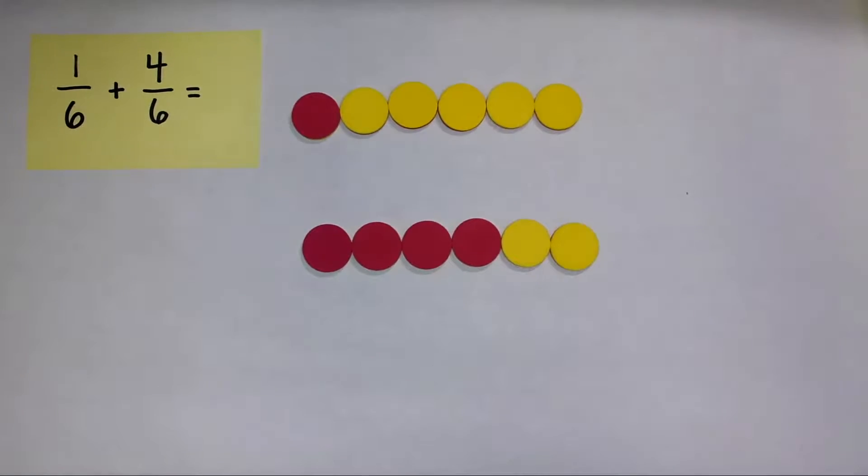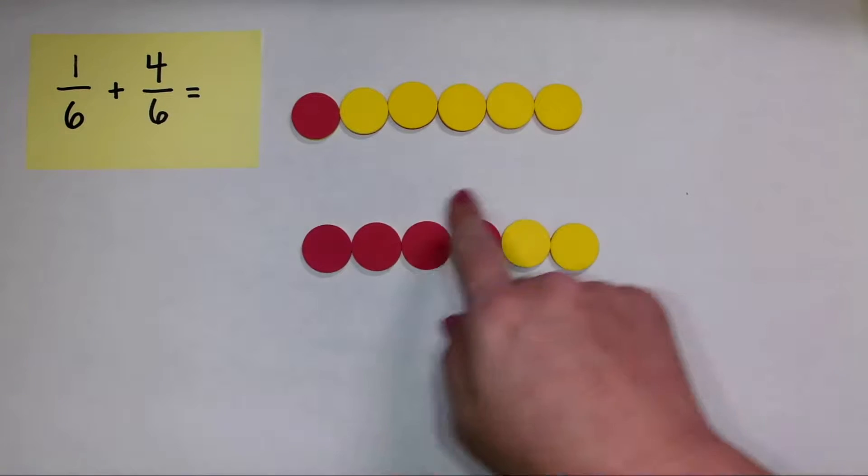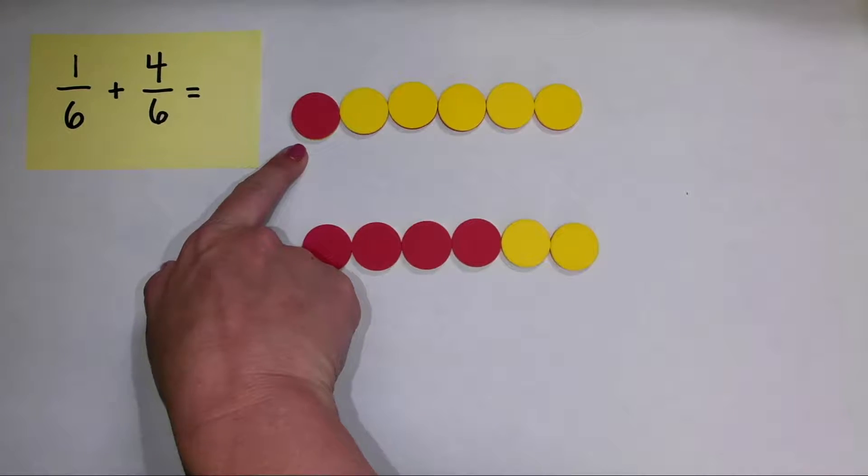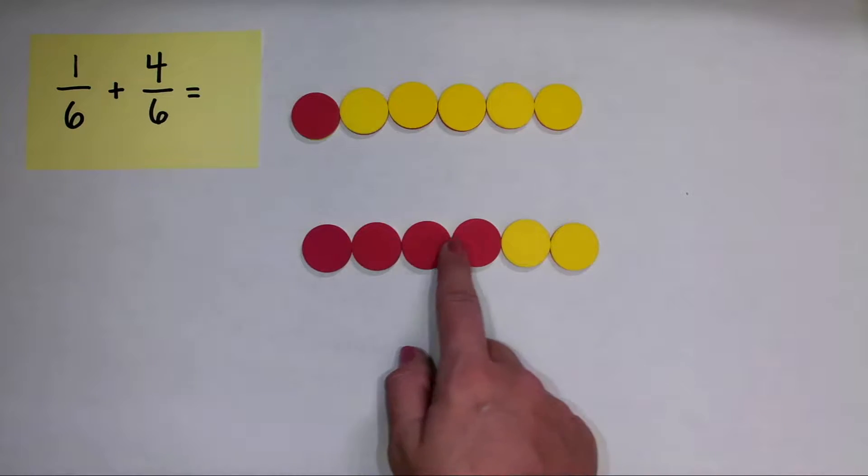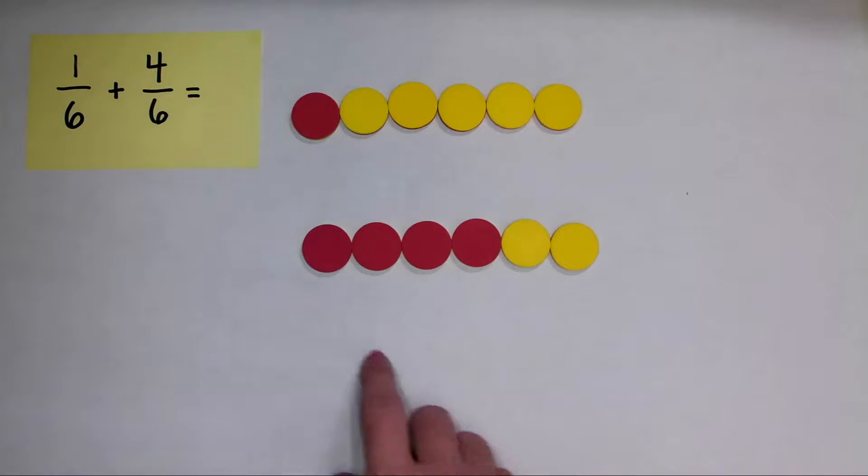Now, I have to think about the value of each of these counters. Right now, this counter has a value of one sixth, and this counter has a value of one sixth. Because the counters have the same value, I can add them together. So I'm going to add the red counters, the parts of the fraction, together.